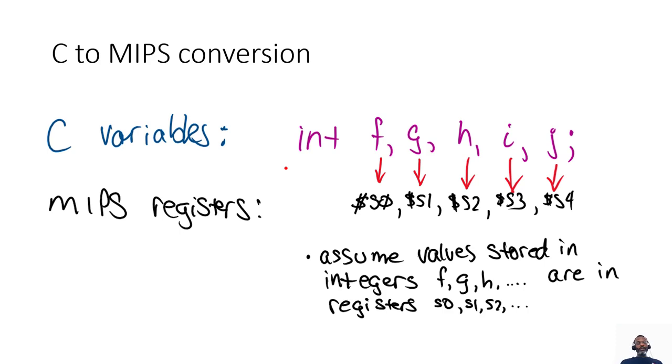In our C to MIPS conversions, we're going to assume that we have integer variables. And we've given those variables the labels F, G, H, I, N, J. And when we're doing our conversions, I'm going to ask you to replace those variables with these registers: S0, S1, S2, S3, S4, etc. So you'll see oftentimes when I'm looking to do a conversion, I'll just ask you to replace the variables and assume that those values are in those particular registers.